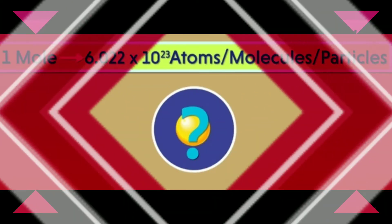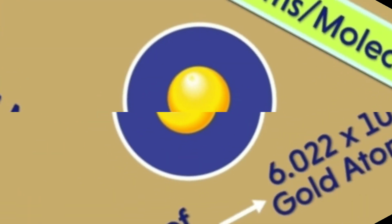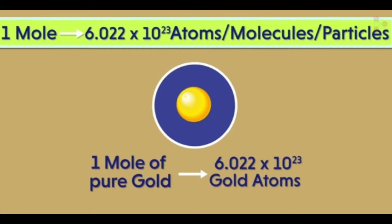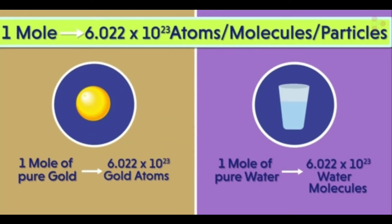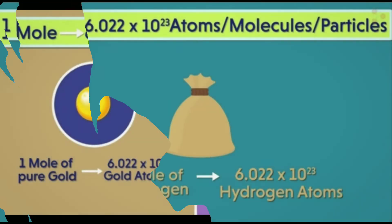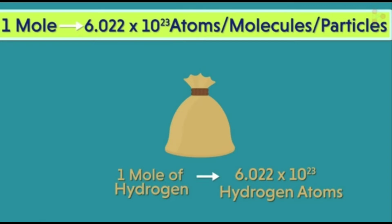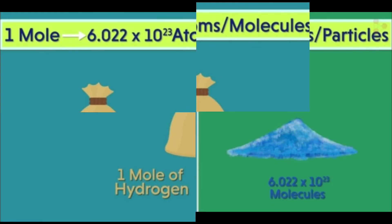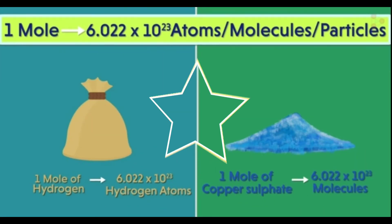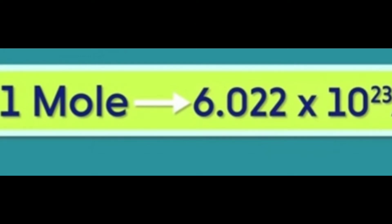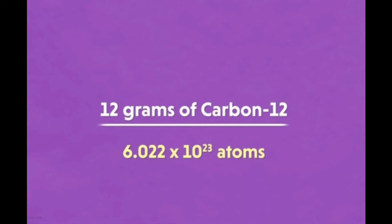One mole of any substance contains 6.022 × 10²³ particles. For example, one mole of pure gold atoms consists of 6.022 × 10²³ gold atoms. One mole of pure water molecules consists of 6.022 × 10²³ water molecules. One mole of hydrogen atoms contains 6.022 × 10²³ hydrogen atoms. One mole of copper sulfate consists of 6.022 × 10²³ copper sulfate molecules. Where does this number come from? This number came from 12 grams of carbon-12 isotope — that is, 12 grams of carbon-12 isotope contains 6.022 × 10²³ carbon atoms.